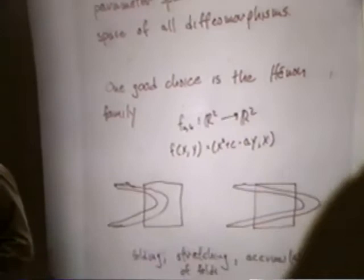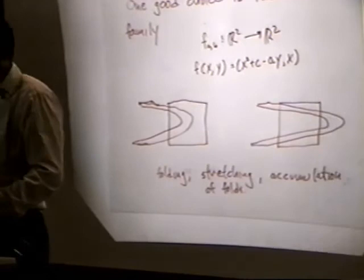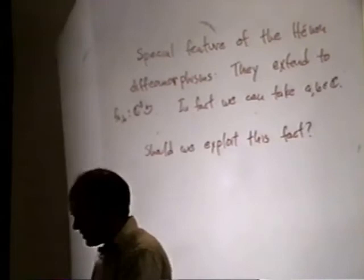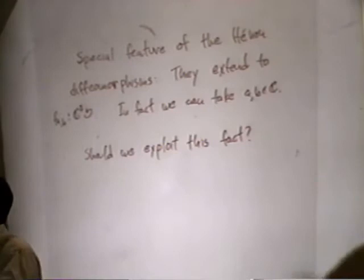The Hénon family has a special feature: since it's given by polynomials, it has an extension to C². So an extension from R² to C². The question is whether it's fair to use this fact that we have this complex extension. We really want to understand these diffeomorphisms of the plane, and this particular family corresponds to something — there's some bigger kind of dynamics going on in C².